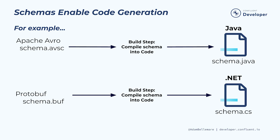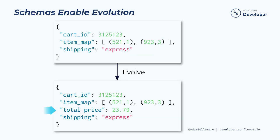Note that these are only some examples of code generation — there are many different compilers that can convert a schema into a class or object in the language of your choice. Schemas also enable evolution to help you handle your changing business requirements. In this example, the cart fact is evolved to add a total price field to the new event. Explicit schema evolution rules provide you with a framework for negotiating changes to your event, making it much easier to express how your data can change over time.